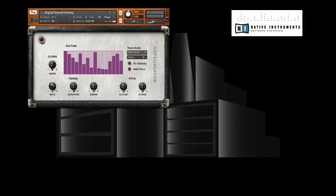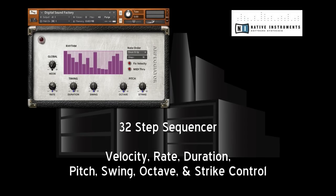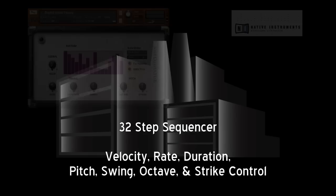The arpeggiator view contains a 32-step arpeggiator and provides 16 presets for note order. Each pattern contains note-on velocity control. Additional controls include rate, duration, swing, octave, and strike.